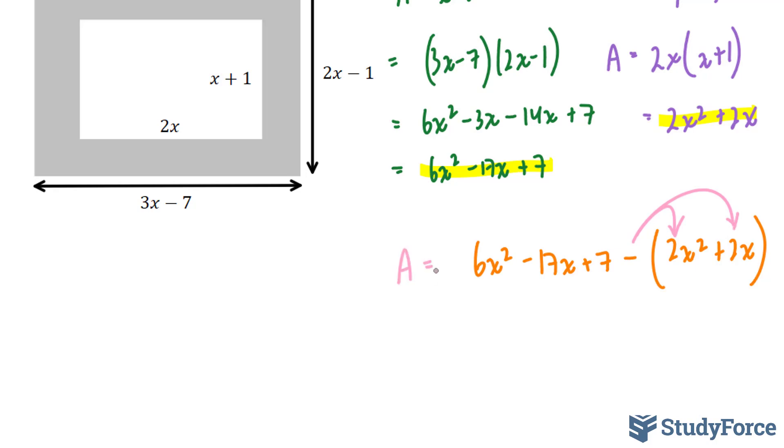And we end up with 6x squared minus 17x plus 7 minus 2x squared minus 2x.